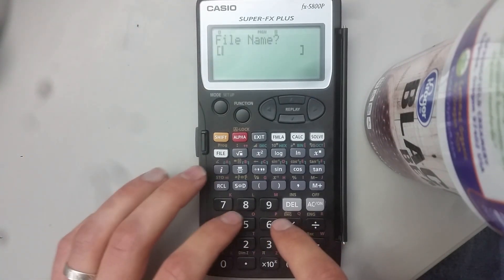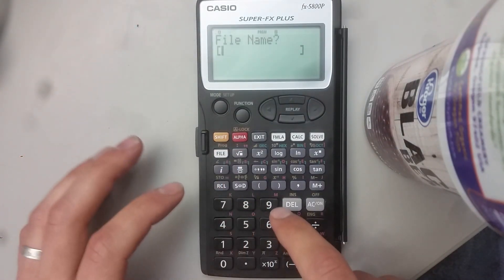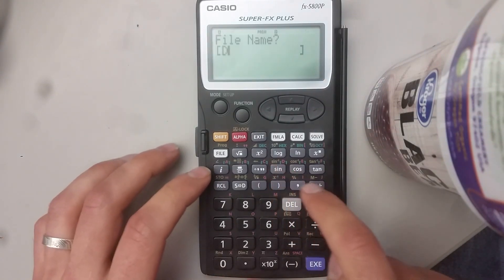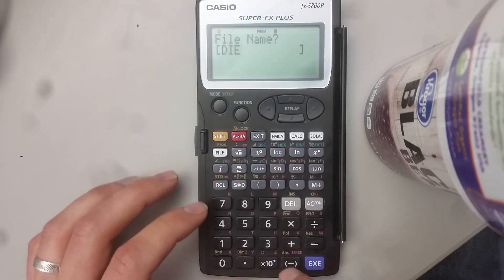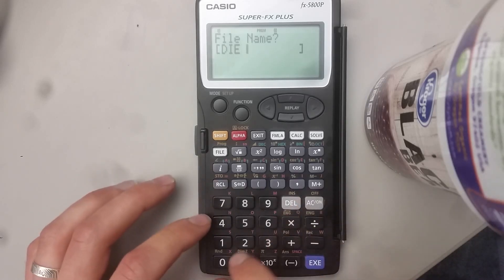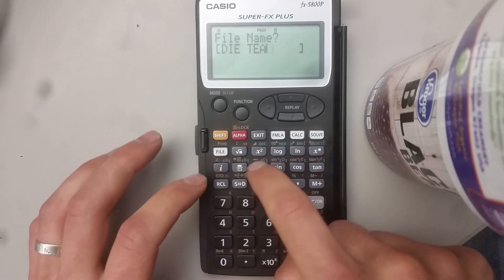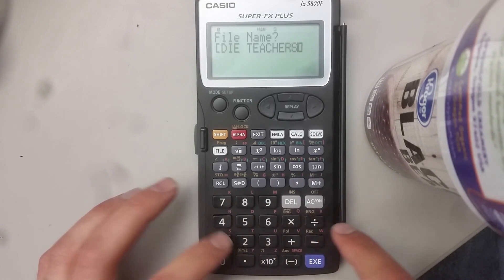We'll hit one and shift alpha for, let's type in die teachers, hit space, T-E-A-C-H-E-R-S.